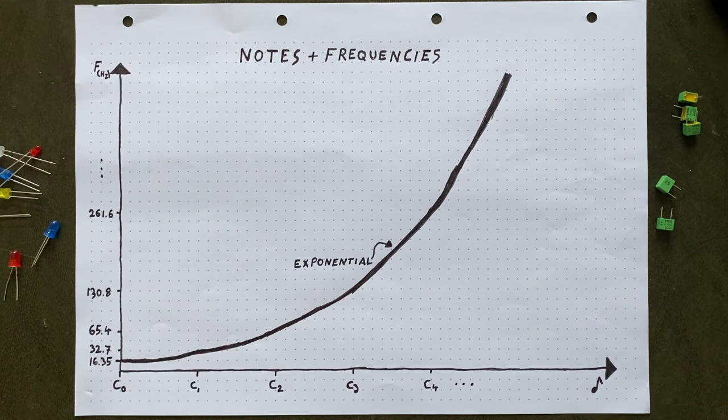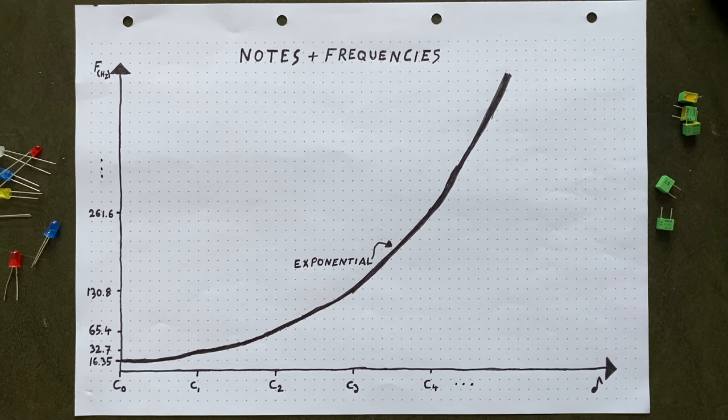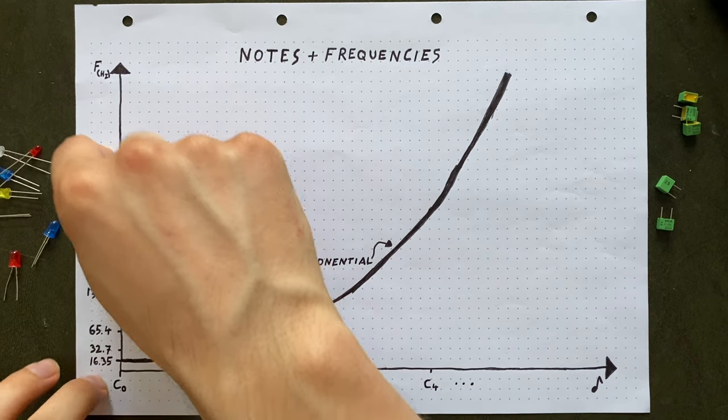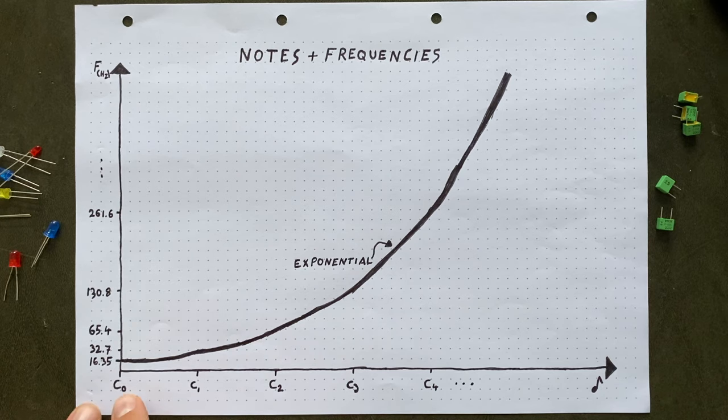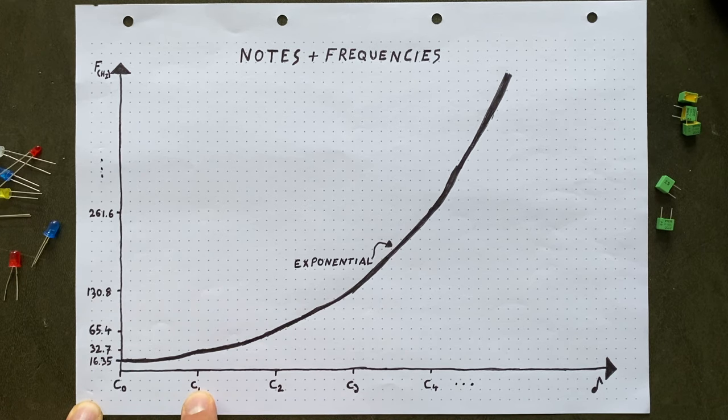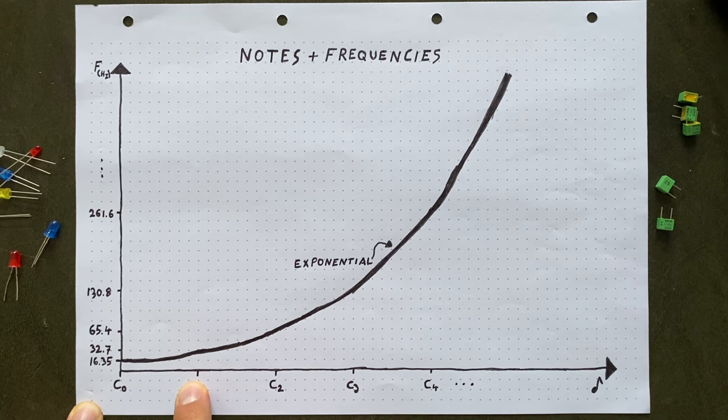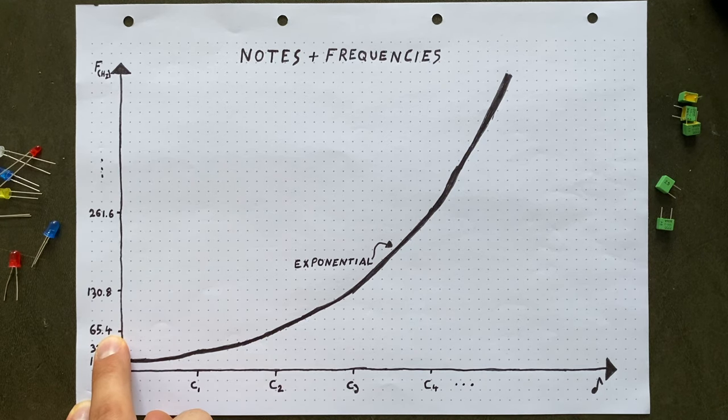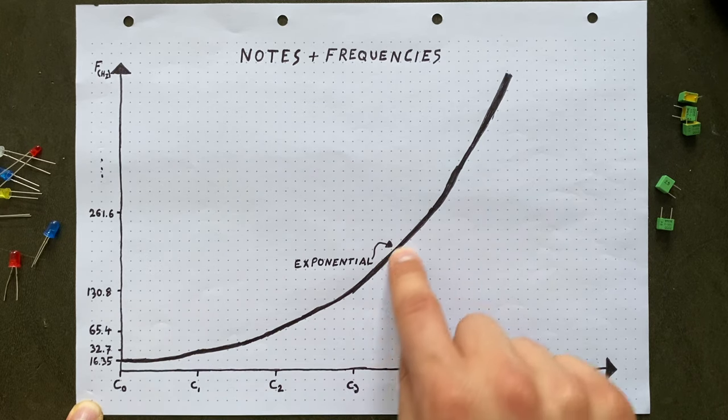Third, and this is a big one, we actually don't want our transistor to operate in a linear fashion. This has to do with the relation between musical notes and their assigned frequencies. If we start out with the lowest C, this note corresponds to a frequency of 16.35 Hz. Going up one octave means that for the next C, our frequency is doubled at around 32 Hz. One more octave and the frequency doubles again. And that means that the relationship between notes and frequencies is an exponential one.